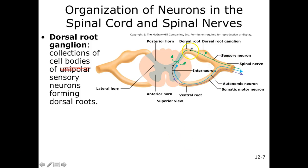This sensory information comes in and can either move up or down the ascending or descending tracks in the spinal cord. Or what usually happens, especially in a reflex, is we communicate with an interneuron and then to a motor neuron, and that information gets carried out. Or the sensory neuron communicates directly with the motor neuron without an interneuron.